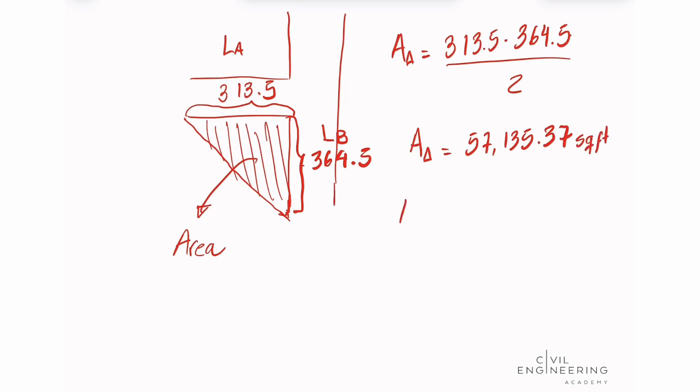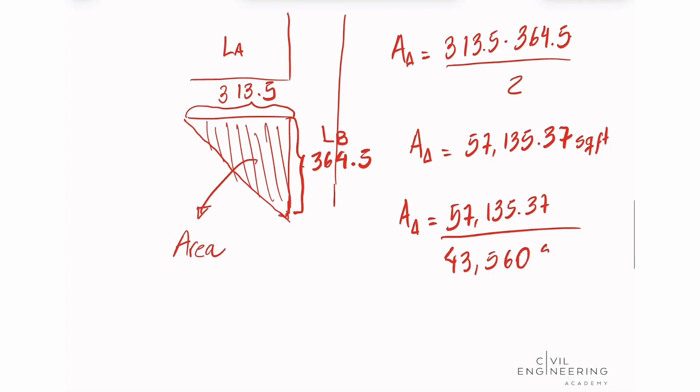So we need to find the area in acres, so we need to make a conversion here, so let's divide this value by 43,560. This is square feet per acre, so we're going to see that our area will be 1.3 acres, so this gives us the correct answer as option B.